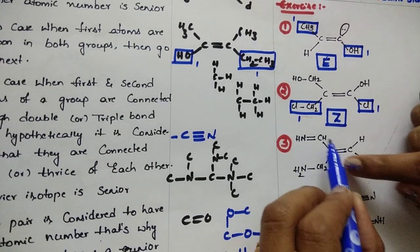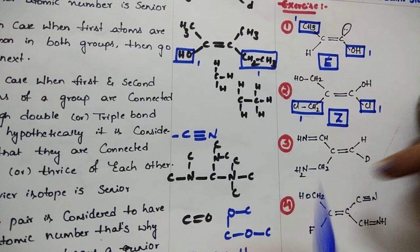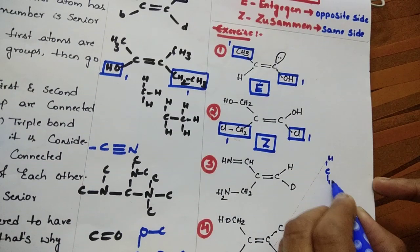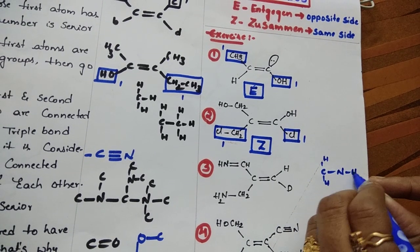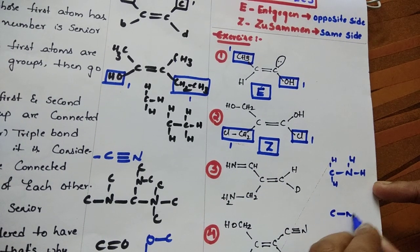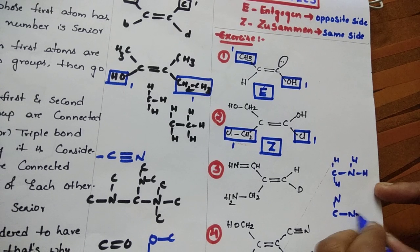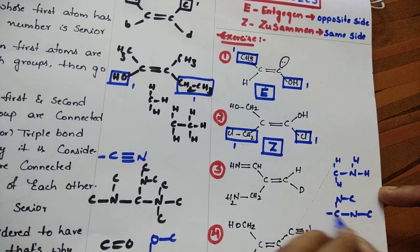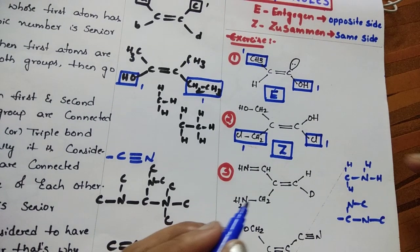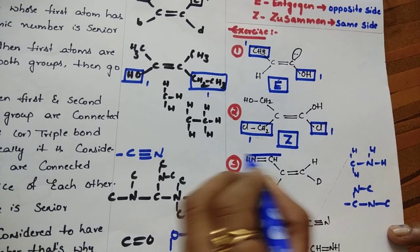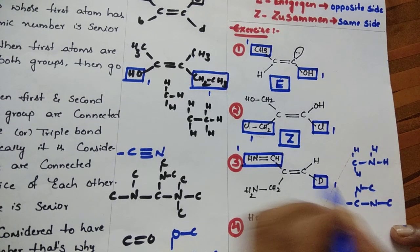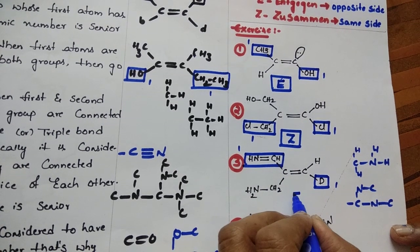Example 3: CH double bond NH vs CH2-NH2. To this carbon: CH2-NH2 means carbon linked to 2 hydrogens, and nitrogen linked to 2 hydrogens. On the other side, carbon double bonded to nitrogen means carbon is linked to 2 nitrogens, and nitrogen is linked to 2 carbons. Carbon linked to 2 nitrogens has more priority than carbon linked to only 1 nitrogen, so the double-bonded carbon-nitrogen is the senior group. Deuterium vs hydrogen — deuterium has more priority. Both senior groups are on the opposite sides, so this is E configuration.